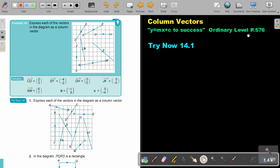Column vectors. You will find this on page 576 in the Namibia Ordinary Level Mathematics textbook, Y equals MX plus C to success. Let's look at an example.